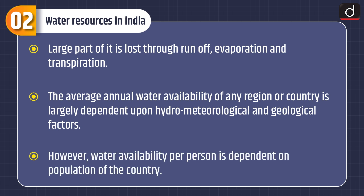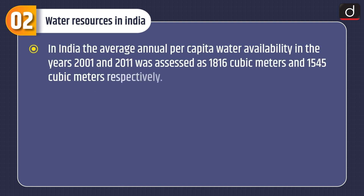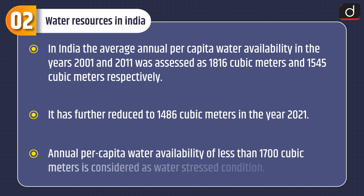The average annual water availability of any region or country is largely dependent upon hydro-meteorological and geological factors. However, water availability per person is dependent on the population of the country. In India, the average annual per capita water availability in the years 2001 and 2011 was assessed as 1816 cubic meters and 1545 cubic meters respectively. It has further reduced to 1486 cubic meters in the year 2021.